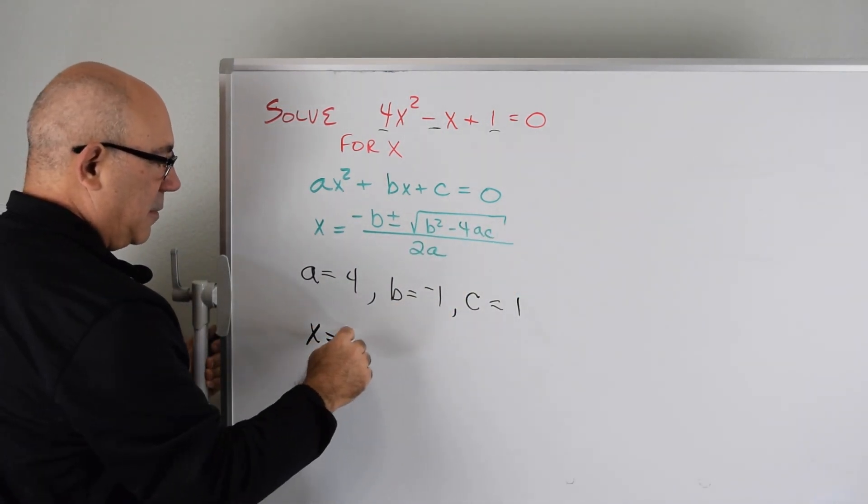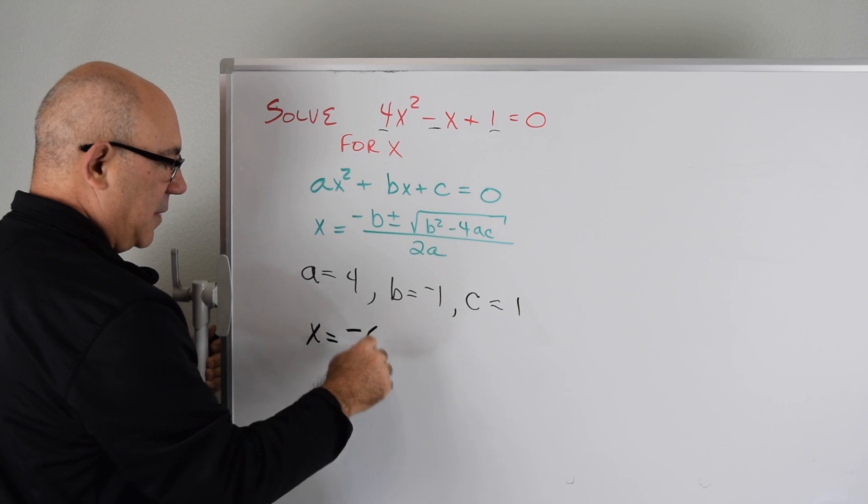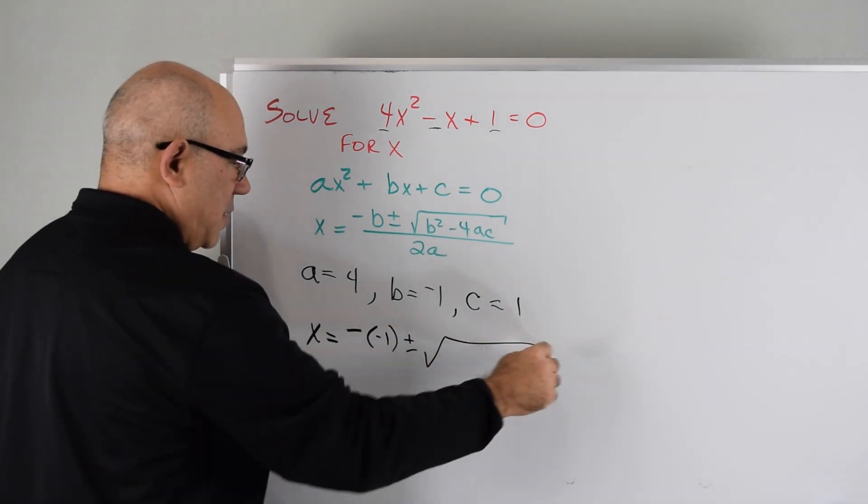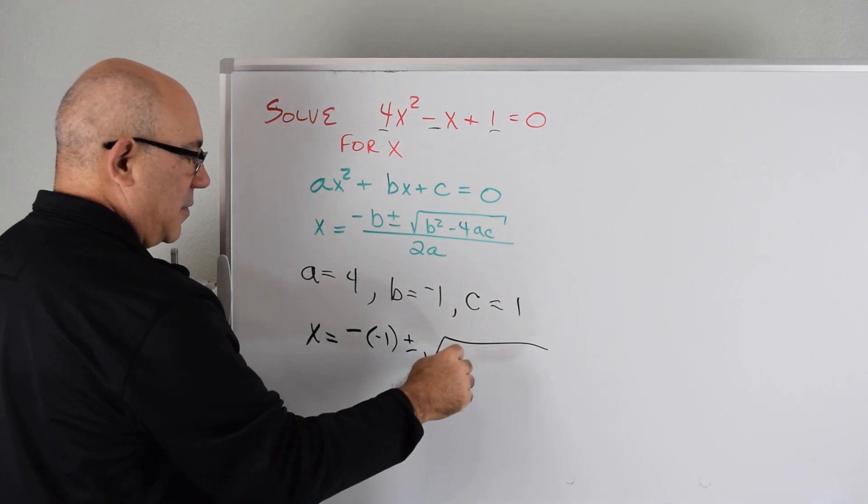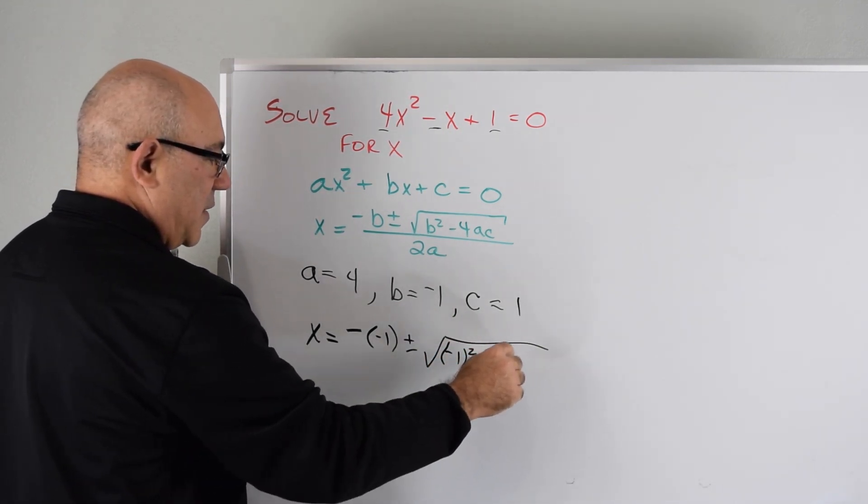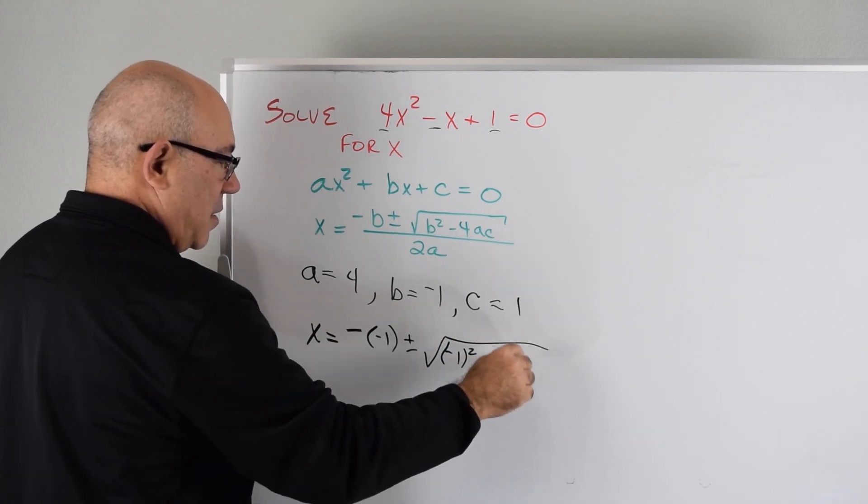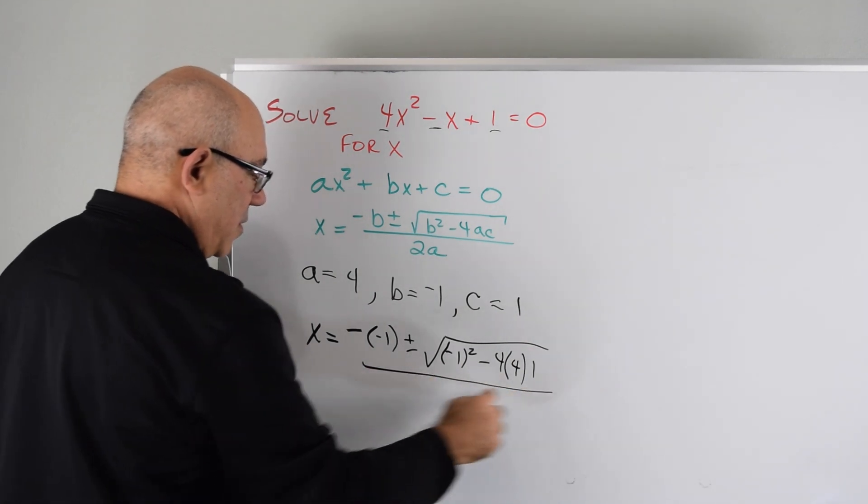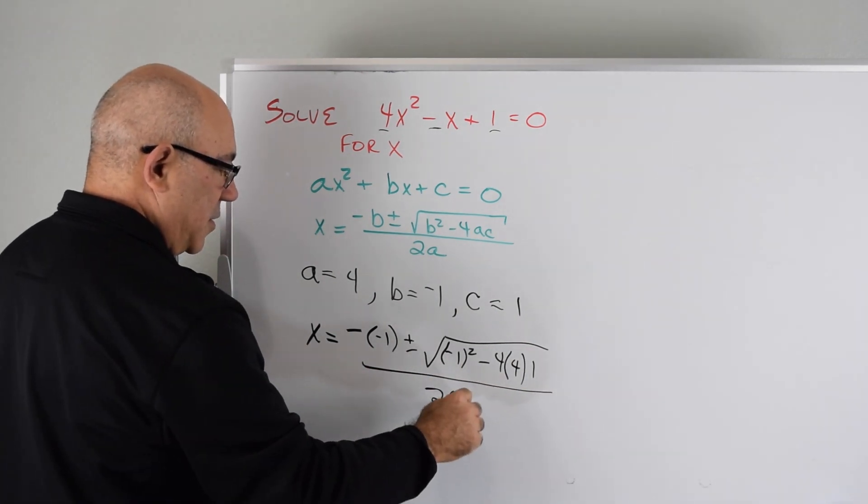We have x equals minus b, so that's minus of -1, plus or minus the square root of b², which is (-1)², minus 4 times a, which is 4, times c, which is 1, all over 2 times 4, which is a.